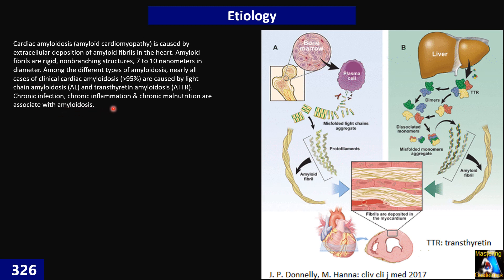Chronic inflammation of any type can also be a trigger, including lupus, rheumatoid arthritis, psoriasis, Crohn's, and so on. Finally, there is also an association with this disorder in the context of chronic malnutrition.